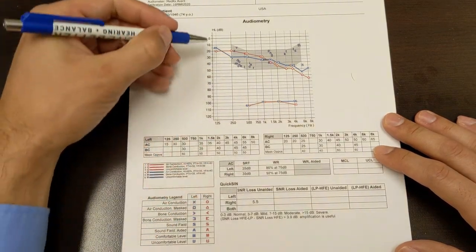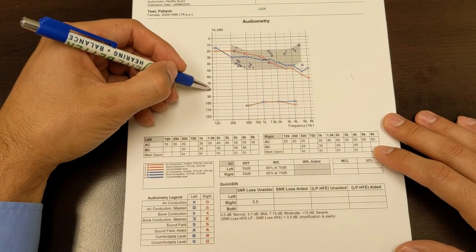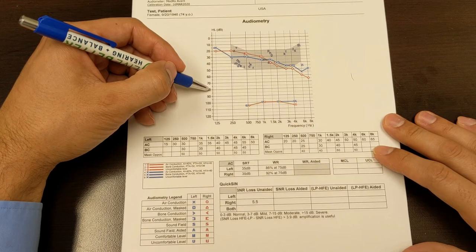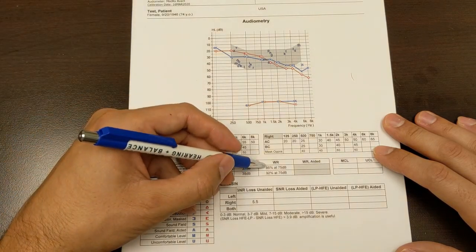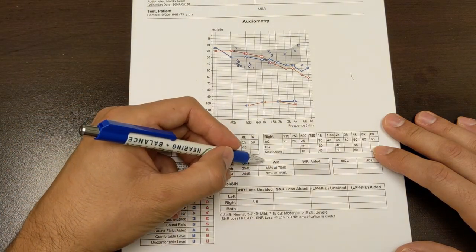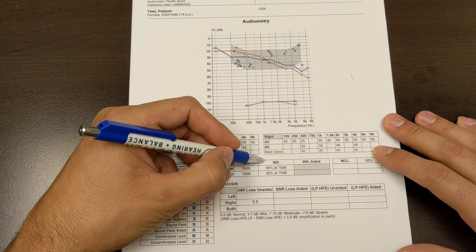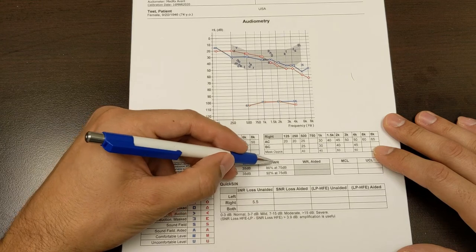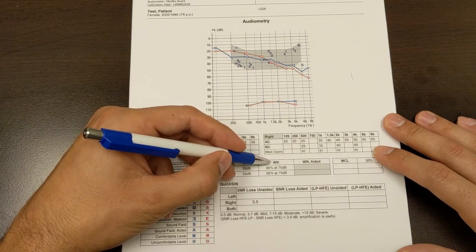But if we increase the volume, and now we're no longer testing for your hearing sensitivity, but we're testing for your word comprehension, we want to see what is in an ideal circumstance with no noise, and the volume loud, how well can you comprehend what you hear. So WR stands for word recognition.